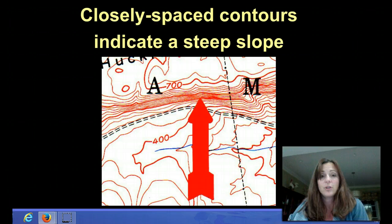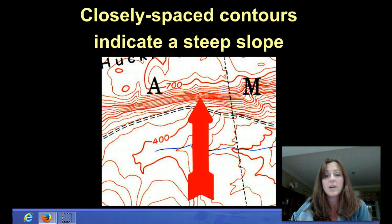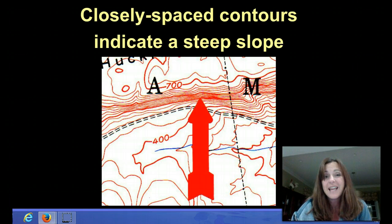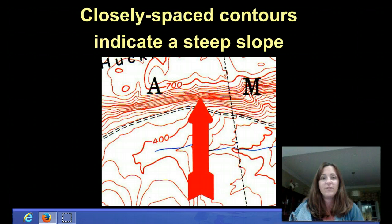The opposite is also true. Closely spaced contour lines indicate a steep slope or a cliff of some kind, if it's this close together. Now on this map it looks like those contour lines are touching, but what you need to understand is they are not touching. They look like they're touching because the ink is very thick, but it's really not touching. Each line is a separate elevation.